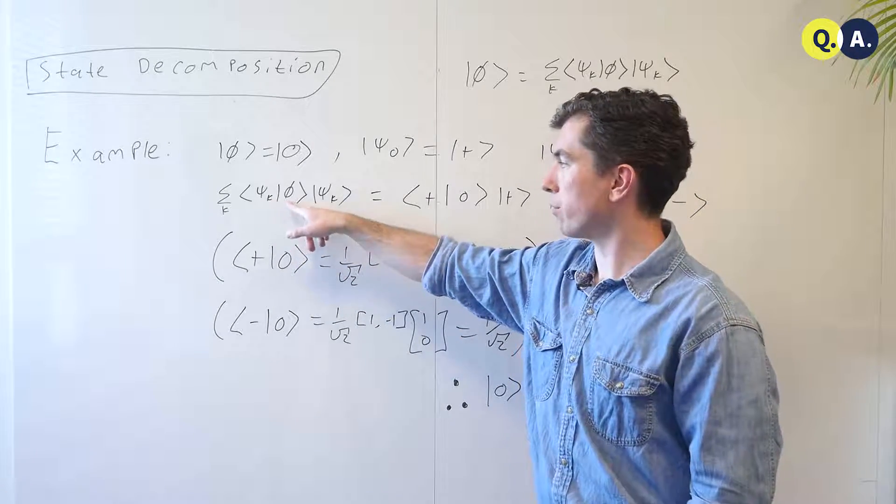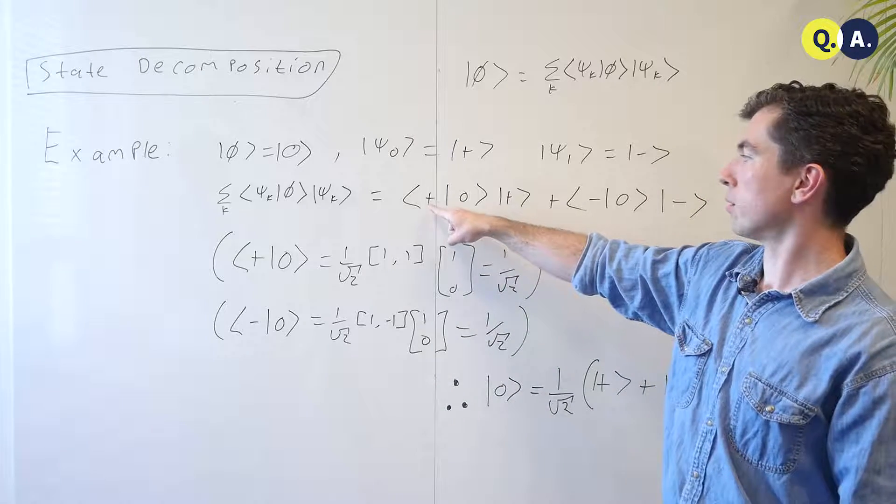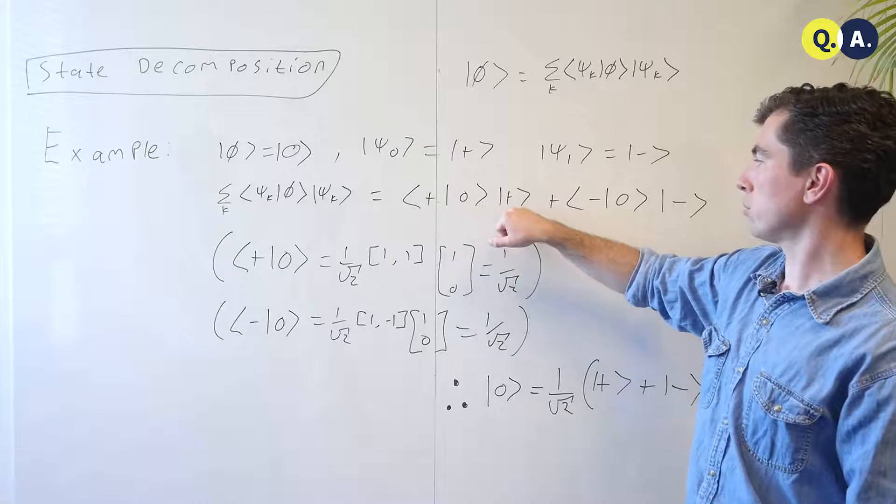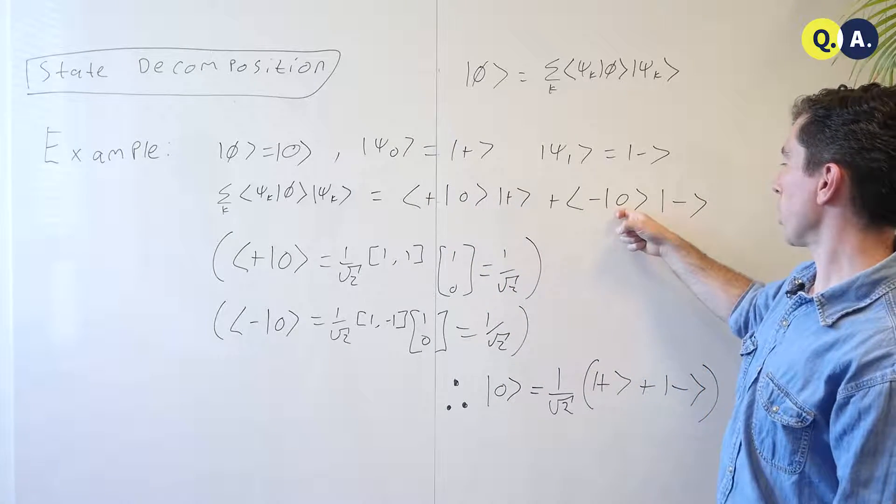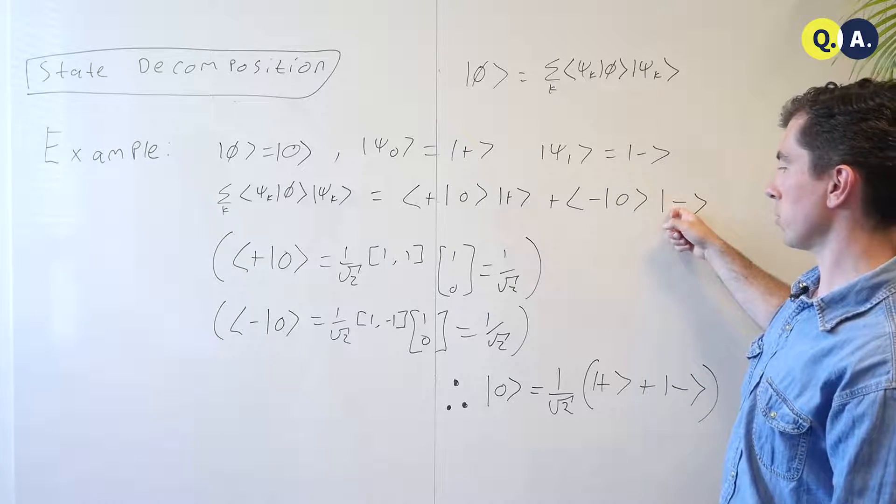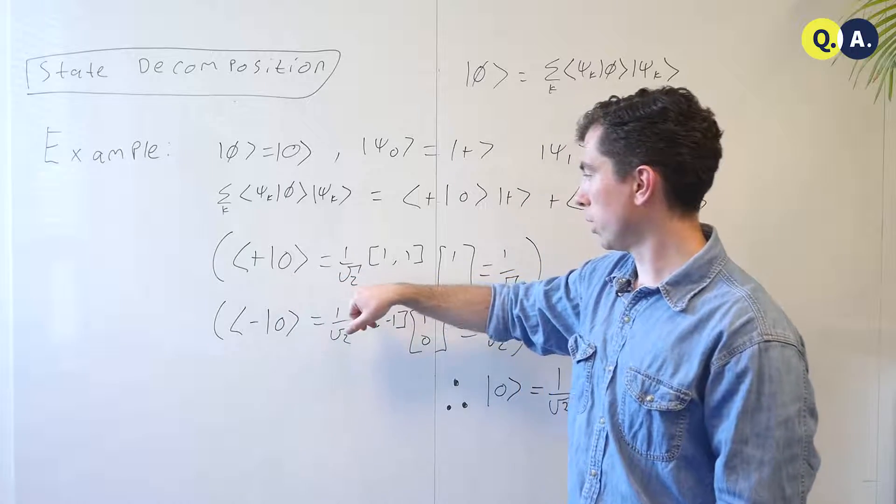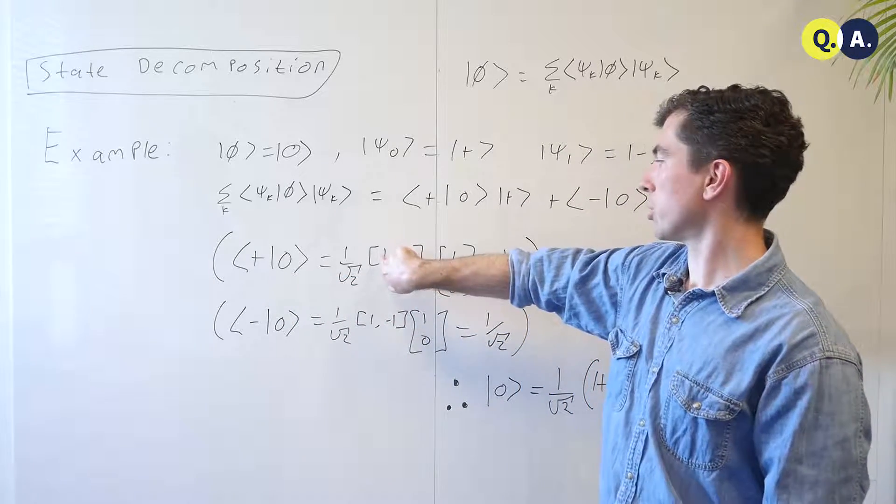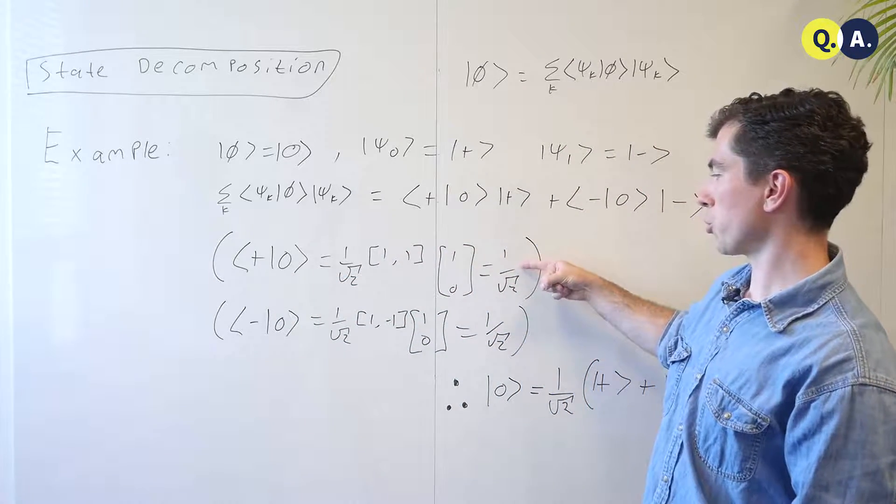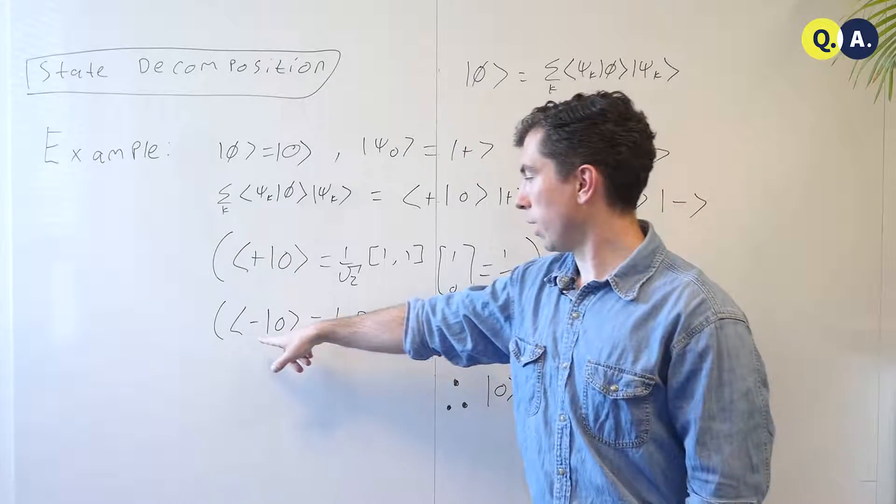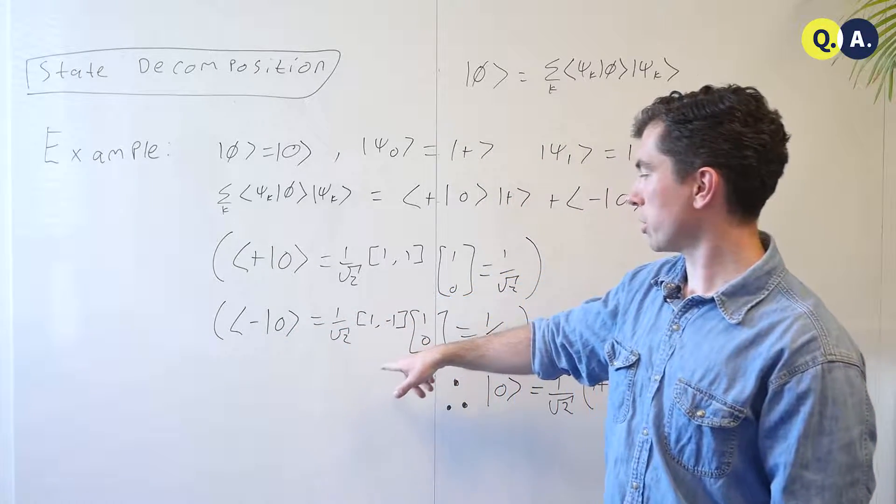The sum over ⟨ψk|φ⟩|ψk⟩ is then the inner product of ⟨+|0⟩ times |+⟩ and the inner product of ⟨−|0⟩ times |−⟩. Now here I figured out those inner products. The inner product ⟨+|0⟩ is 1/√2 times the dot product of these two vectors, which is just 1/√2, and the calculation for ⟨−|0⟩ is very similar.